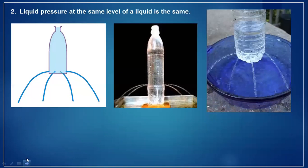The second characteristic of liquid pressure is that at the same level, liquid pressure is the same. You can demonstrate this by taking a plastic bottle, making several holes at the same level, and pouring liquid in. The ejection distance from each hole is the same, confirming that liquid pressure is equal at the same level.